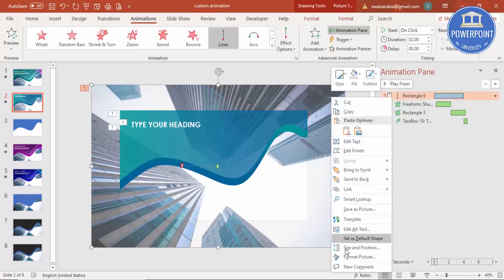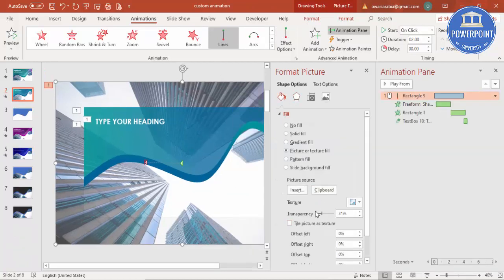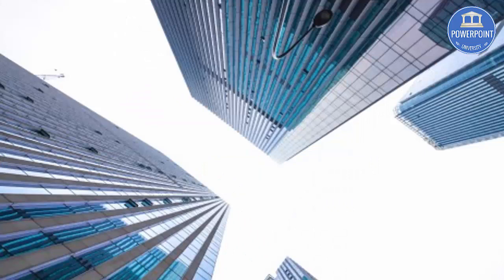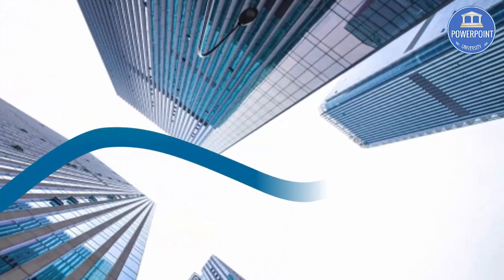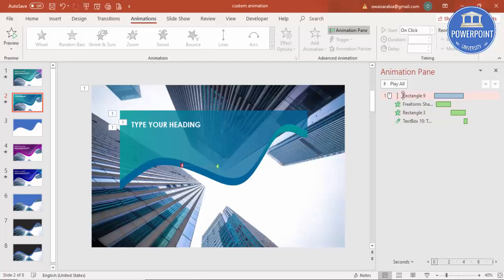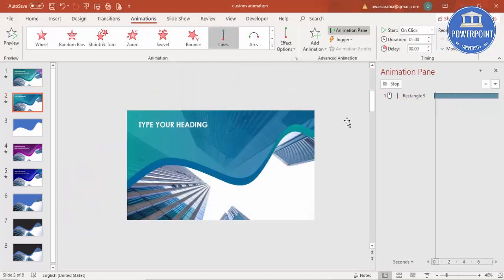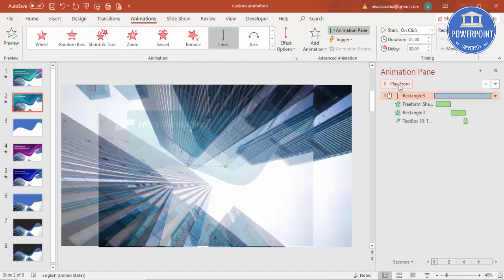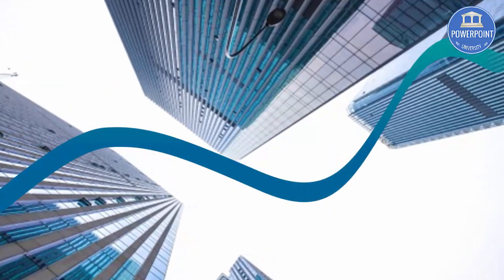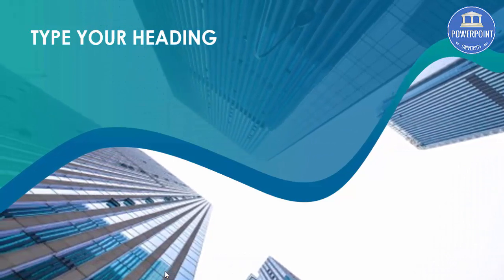Right-click the image, go to Format Picture and remove the transparency effect. Now play the slide show — when you click, the building slowly moves, the headline appears, and then the building slowly returns to its original position.